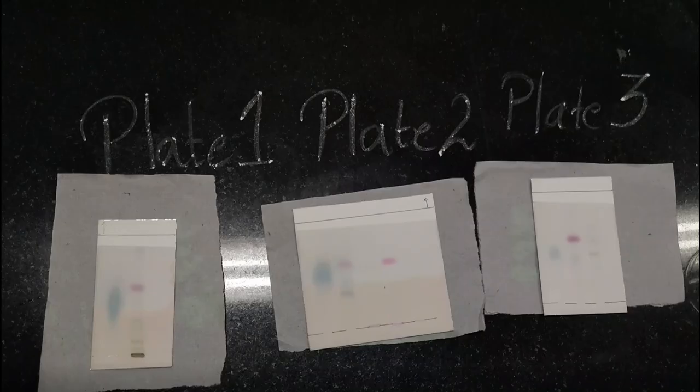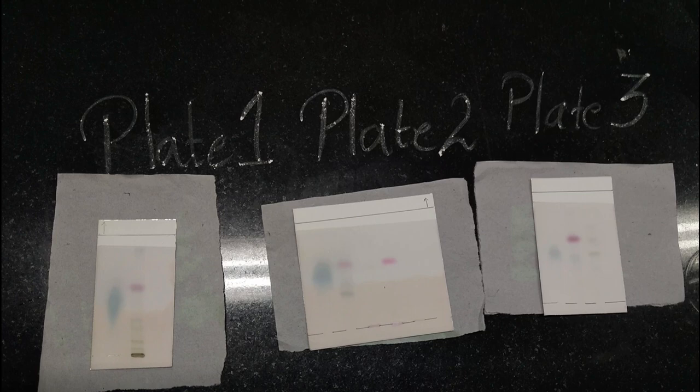After visualization, different color bands are observed, indicating presence of different terpenoids, which can be eucalyptol, thymol, eugenol, etc.